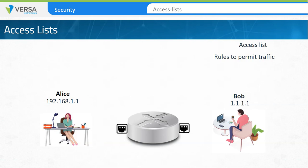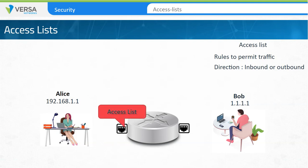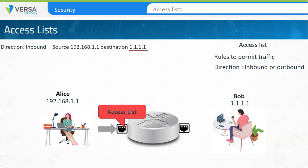The access list can be applied as an inbound or an outbound access list. The direction of the access list is from the perspective of the router. In our example, an access list is applied to the router on the interface that connects to Alice. Traffic from Alice to Bob is entering the interface and matches the source address of 192.168.1.1 and the destination address of 1.1.1.1. The action of the rule is to permit the traffic, allowing Alice to initiate communication with Bob.